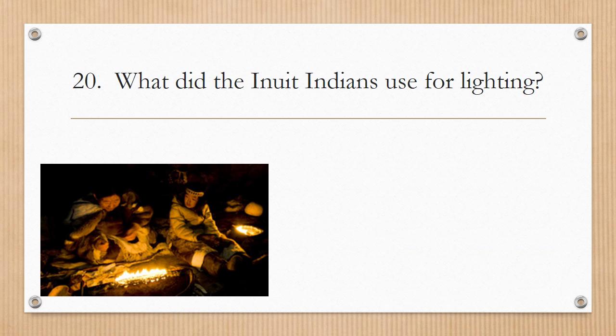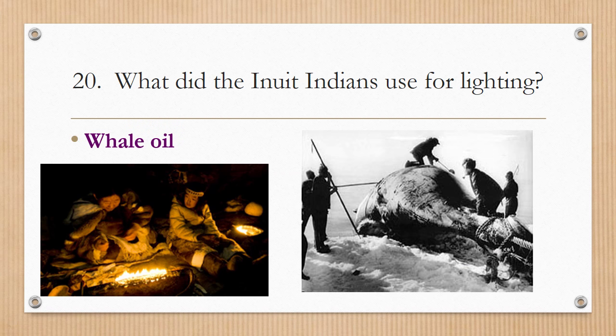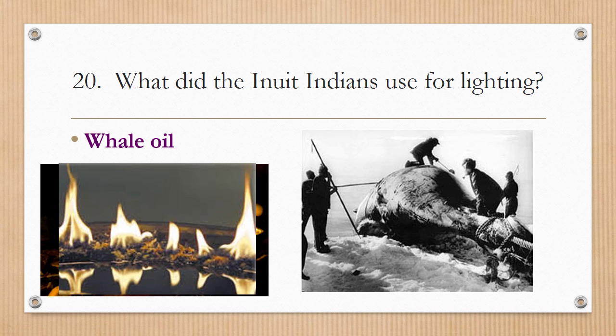Number twenty: what did the Inuit Indians use for lighting? Whale oil. Here are some Inuit Indians actually harvesting oil from a large whale they have speared. This oil would produce a type of fuel in order to light their igloo houses.